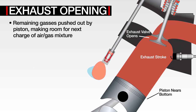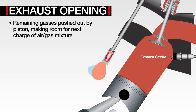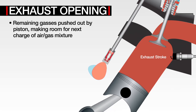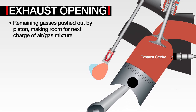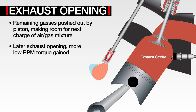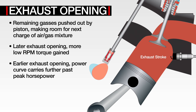The combustion pressure is now used to force the burned mixture out of the exhaust. During the exhaust stroke, the remaining exhaust gases will be pushed out by the piston, making room for the next charge of the air-gas mixture. The later the exhaust opens, the more low RPM torque you gain by lengthening the power stroke. The earlier the exhaust opens, the more the power curve will carry past the point of peak horsepower, due to both reduced exhaust pumping losses and the exhaust having more time to free itself of the chamber.